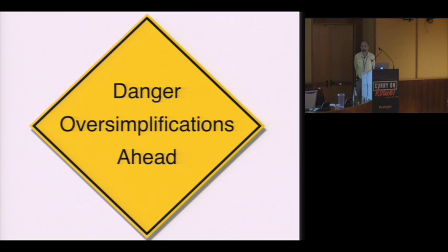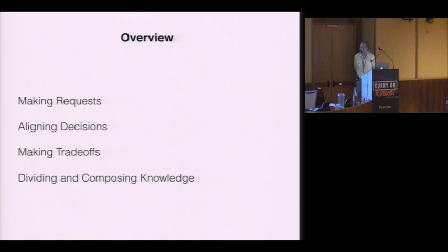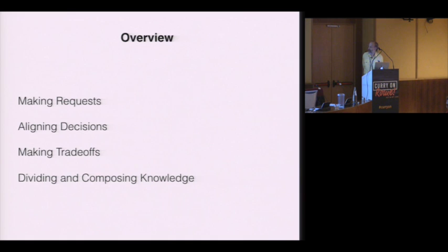Any such interdisciplinary investigation necessarily touches lightly on many different topics that other disciplines have studied in quite a lot of depth. The price of this is tremendous oversimplification, so beware. In the first part of the talk, we'll discuss the making of requests, then the aligning of decisions by the entities involved in these networks, the trade-offs involved in aligning the behavior, and how all of this bears on the division and composition of knowledge.